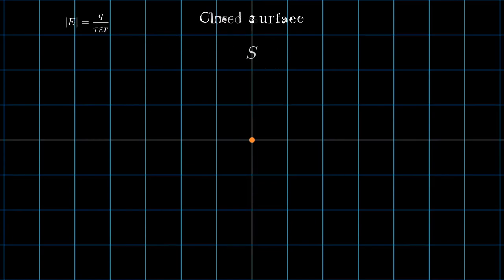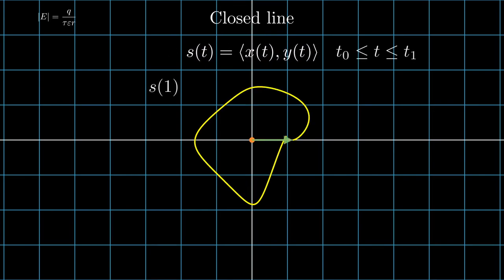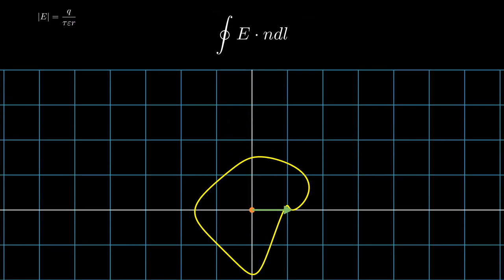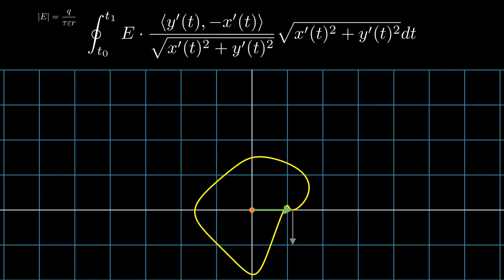The analogous closed surface is now a closed line expressed as the position vector S of a parameter T from T0 to T1, where S of T0 equals S of T1. This is the expression of a general flux integral in 2D. I will be integrating counterclockwise, so the normal vector will always be the unit tangent vector of S rotated 90 degrees clockwise. DL can be replaced with this term times dt, and then that term cancels out.